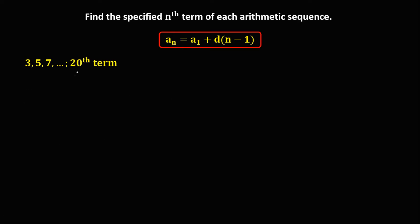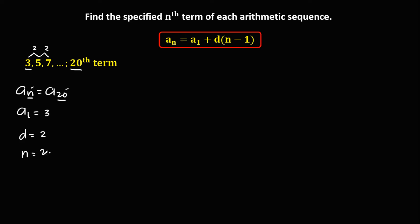Then for this given, since we're looking for the 20th term, a sub n is equal to a sub 20. Then for a sub 1, the first term, that's positive 3. And the common difference — from 3 to 5 is 2, and 5 to 7 is also 2 — so the common difference is positive 2. Then for n, since a sub n is equal to a sub 20, n is equal to 20.